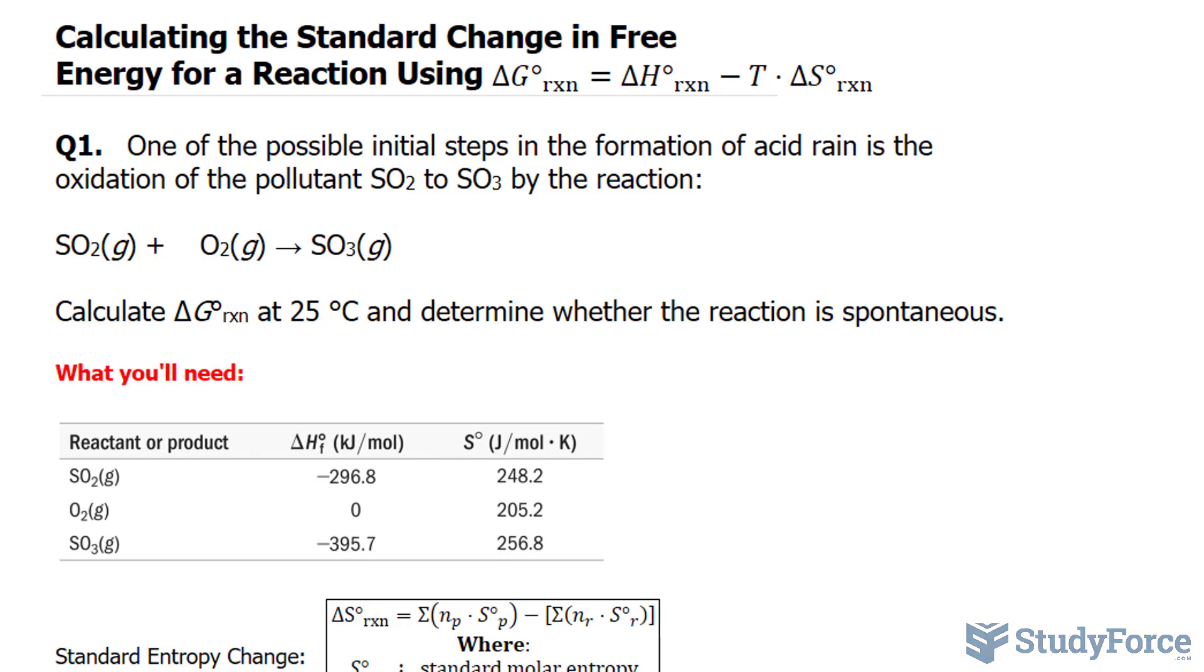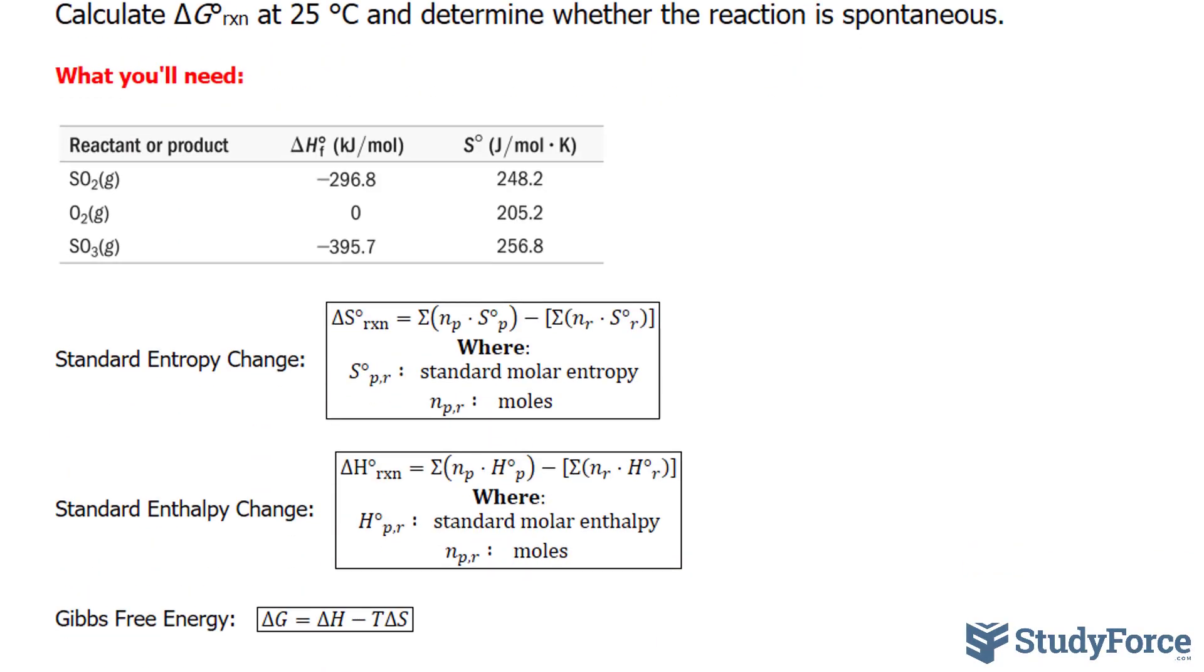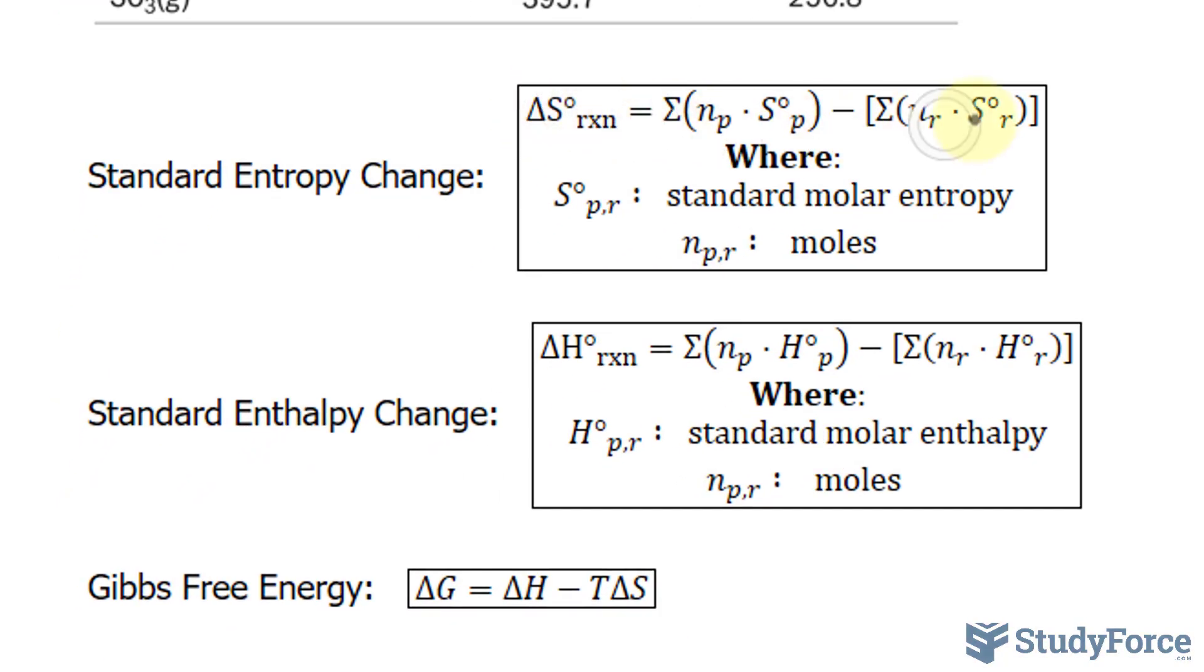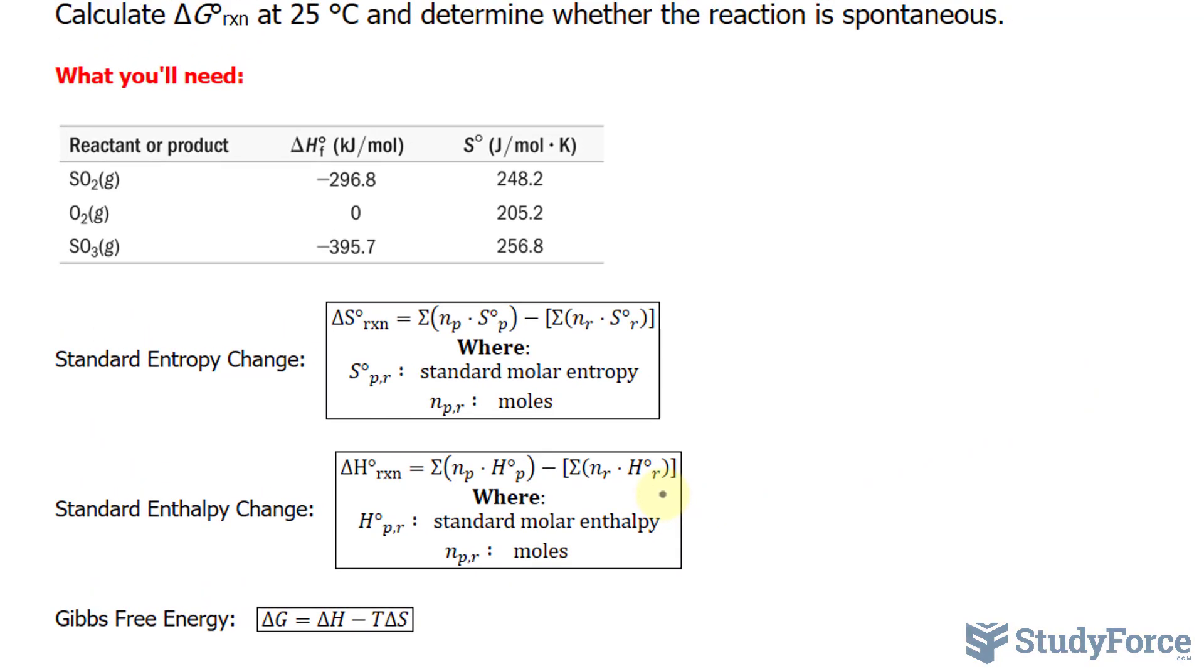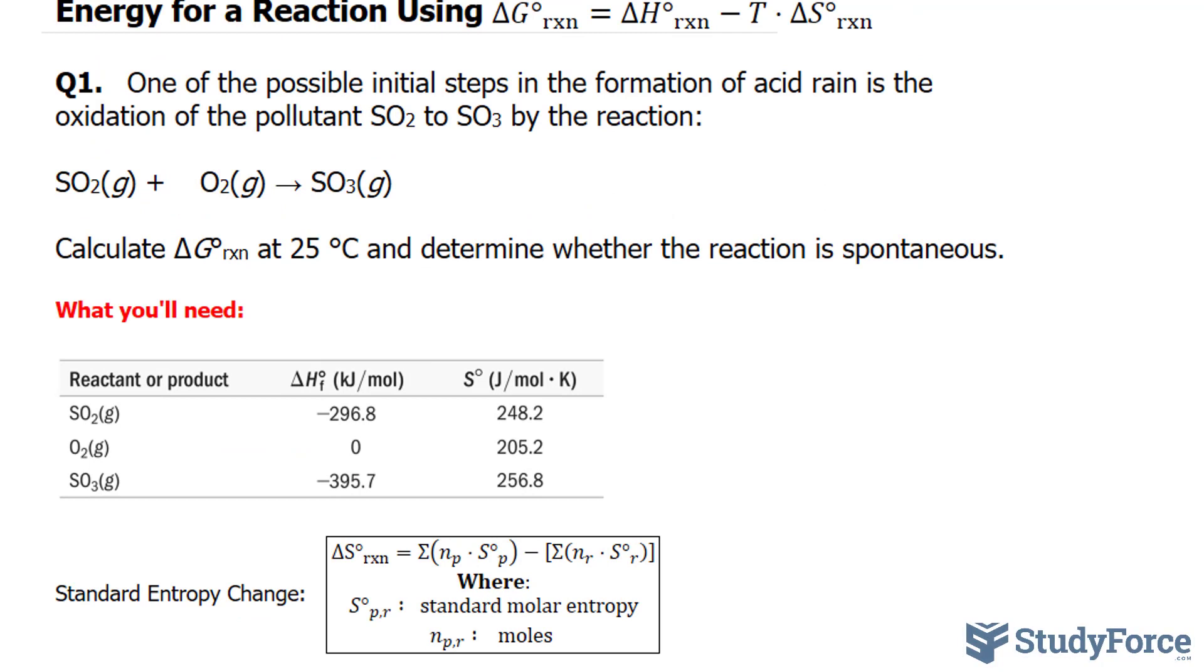What we'll have to do here is calculate the standard entropy change using this formula, then the standard enthalpy change using the formula underneath, then finally Gibbs free energy formula to find delta G for this reaction. You'll also need a table of values showing the change in enthalpy for each of the molecules within this reaction, and I've gathered them up here for convenience sake.